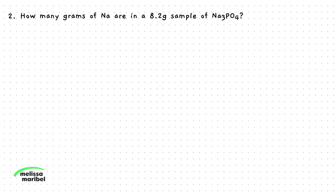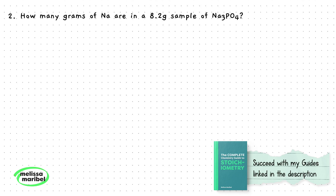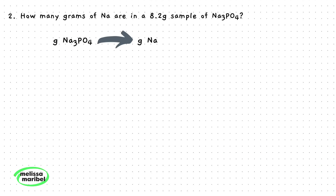Number 2. We are asked to find the grams of sodium in an 8.2 gram sample of sodium phosphate. In order to do this, we will need to go from the given grams of sodium phosphate, then change this compound to sodium.